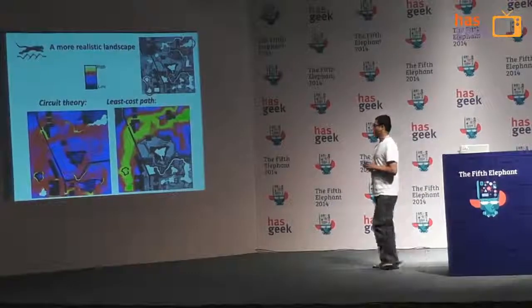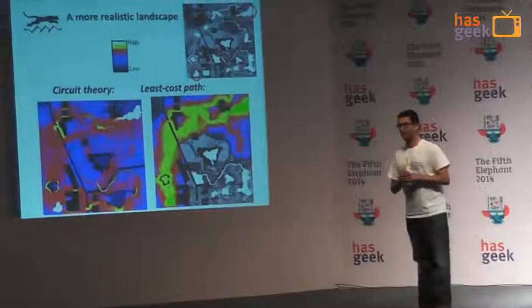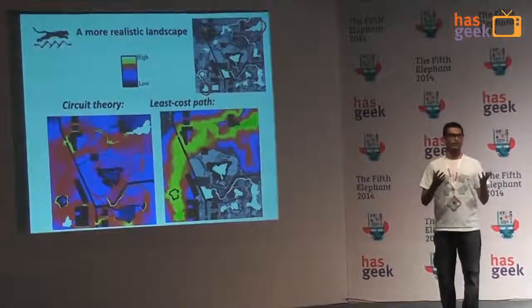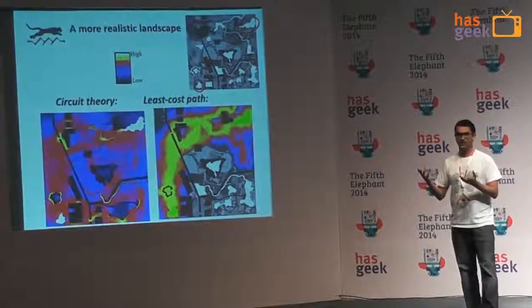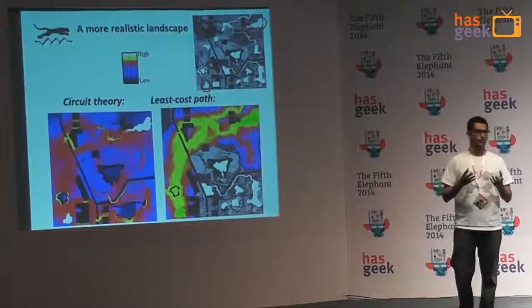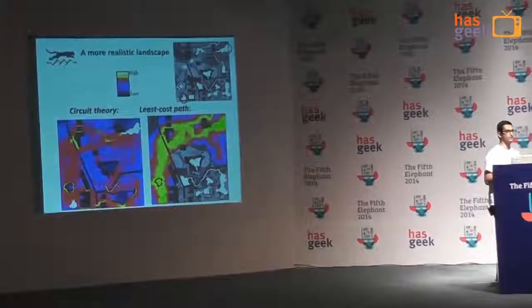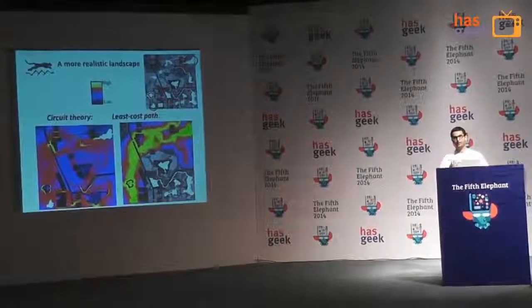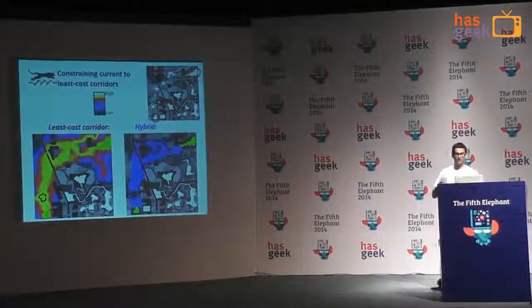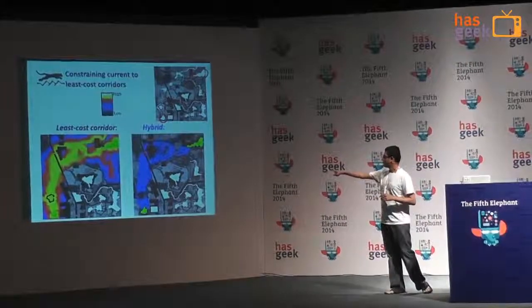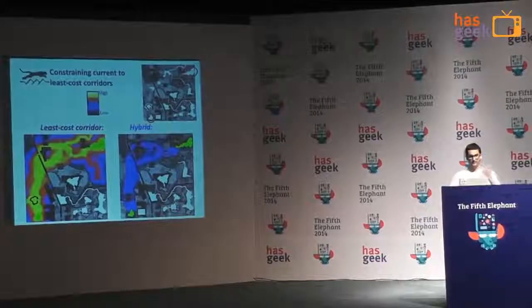Why does this become important? If you need to connect two areas and there are human settlements, highways, and other obstacles, and you're an agency purchasing land for conservation — do you pay a lot of money to buy urban land, or are there alternative approaches that are monetarily more feasible? Those are the kinds of questions we can answer once we move beyond least-cost paths. The hybrid approach identifies all those pinch points you need to safeguard in order to put your conservation dollars to work.